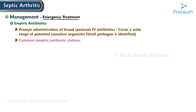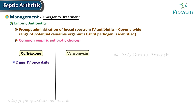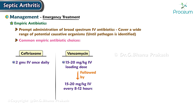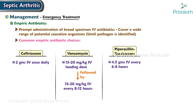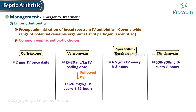Common empiric antibiotic choices include ceftriaxone 2 grams IV once daily, vancomycin 15–20 mg/kg IV loading dose followed by 15–20 mg/kg IV every 8–12 hours, piperacillin-tazobactam 4.5 grams IV every 6–8 hours, and clindamycin 600–900 mg.